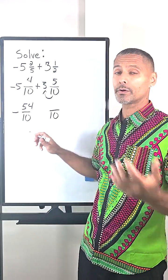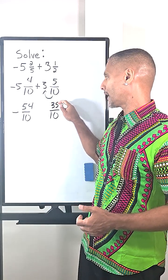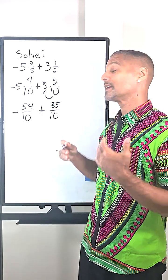And for this mixed number, we multiply 10 times three, which is 30 plus five more is 35. So that converts to be positive 35 tenths.